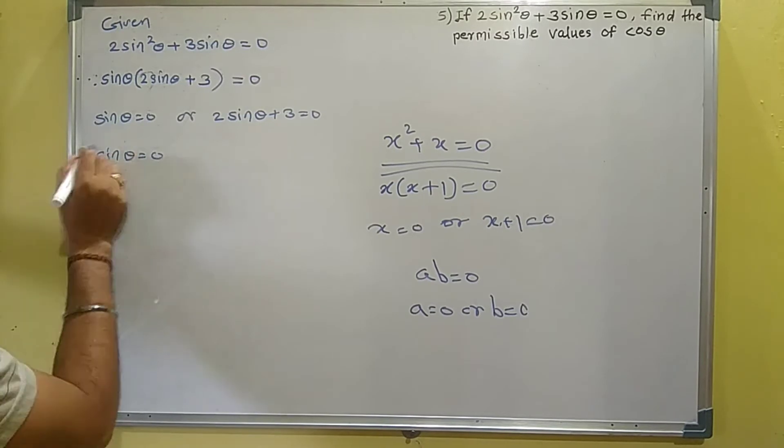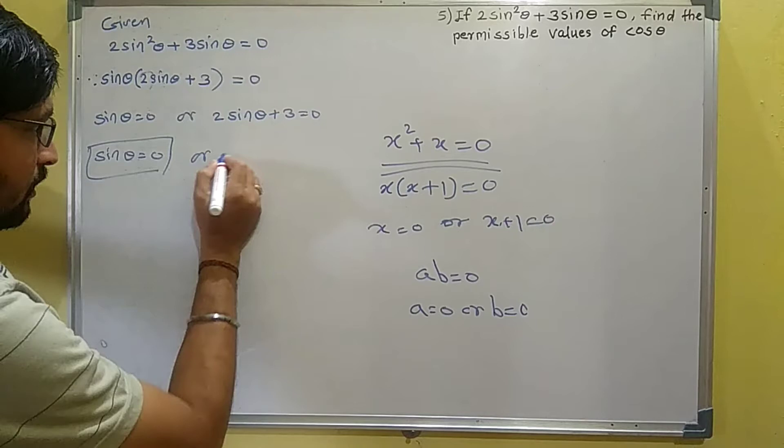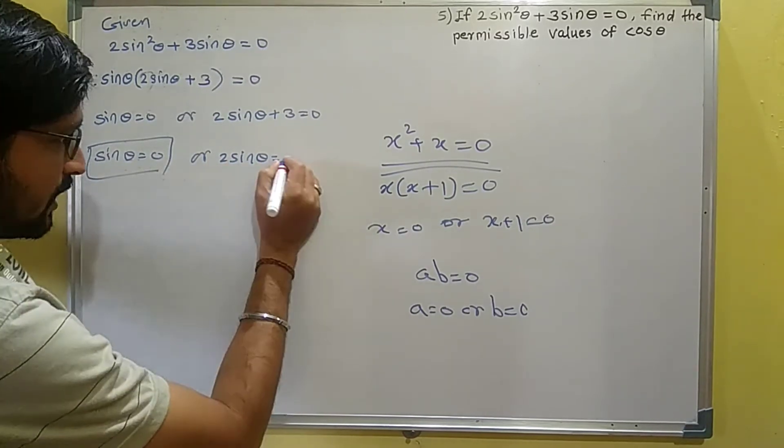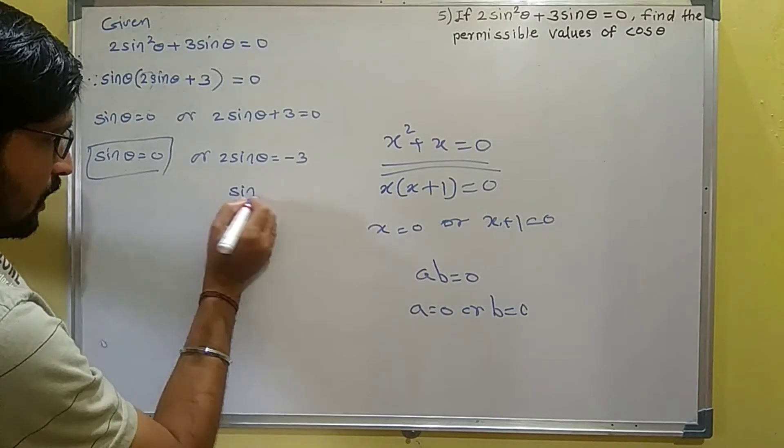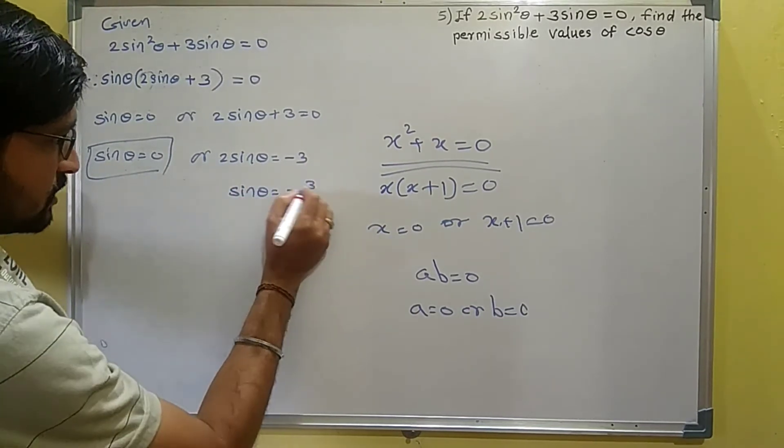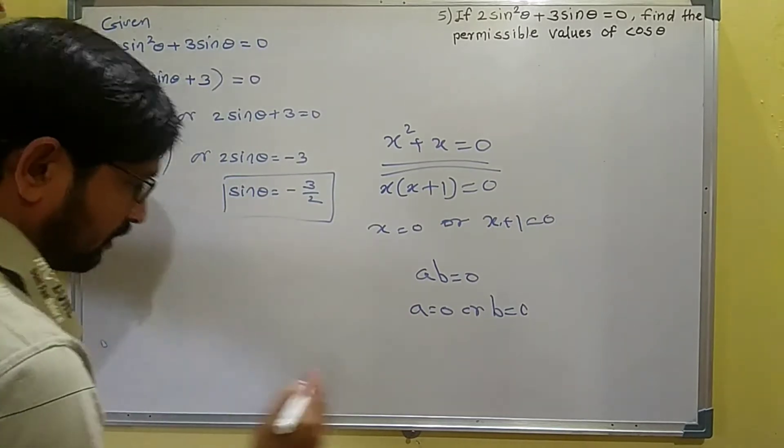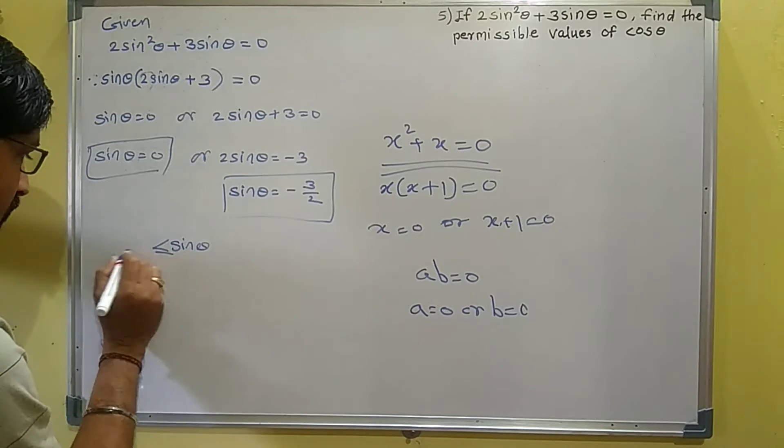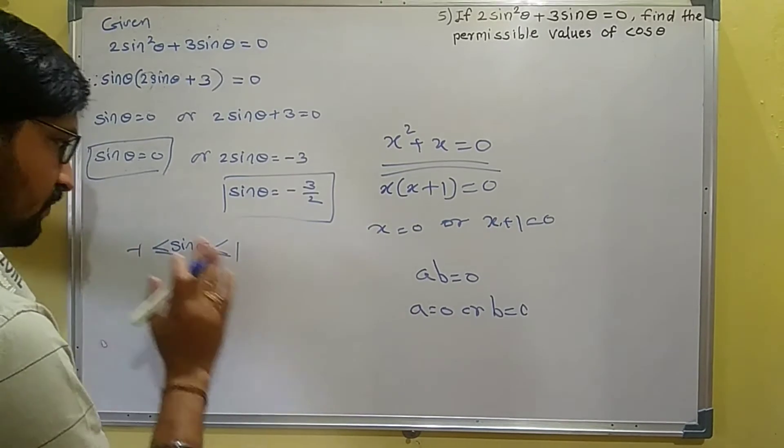sinθ = 0 is our first value. Now solving the second equation: moving 3 to the other side, 2sinθ = -3, so sinθ = -3/2. This is the second value for sinθ.